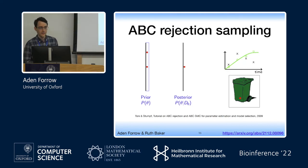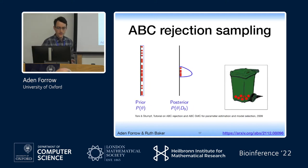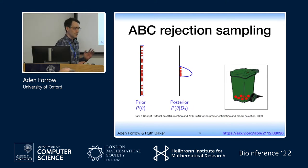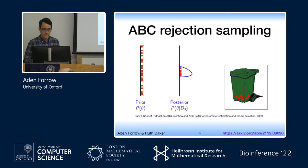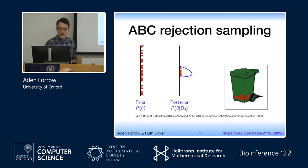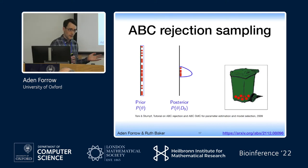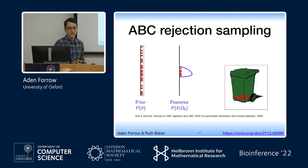You do this lots and lots of times, and you end up with a set of samples that are samples from your approximate posterior, and another set where the simulation result didn't look like your data which you ignore. In theory this definitely works — it gets you samples from an approximate posterior without having to write down a likelihood, but it is generally computationally very, very expensive.